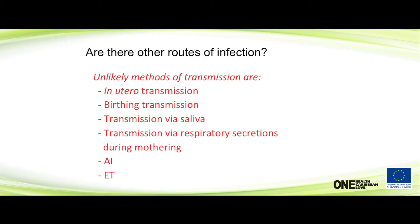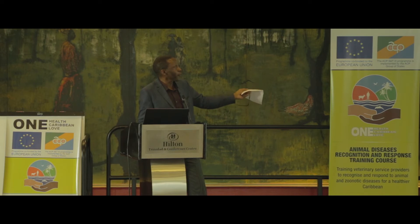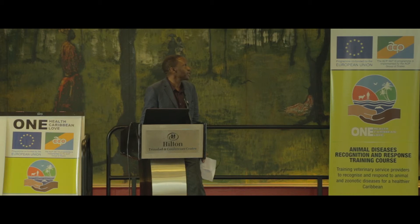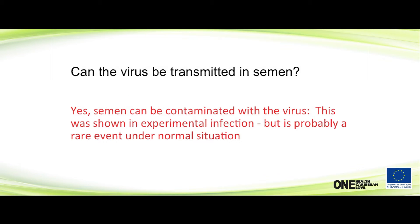Unlikely — not impossible — means of transmission include in utero infection, transmission during birth via placental and other fluids, saliva, and respiratory secretions during mothering. Artificial insemination and embryo transfer are also considered, but we cannot say with absolute certainty whether the virus is in semen — it has never been definitively proven. Within a herd there may be horizontal transmission through milking equipment and fomites, and there is some evidence of transmission that way. Semen can be contaminated, but it is thought to be a rare event.